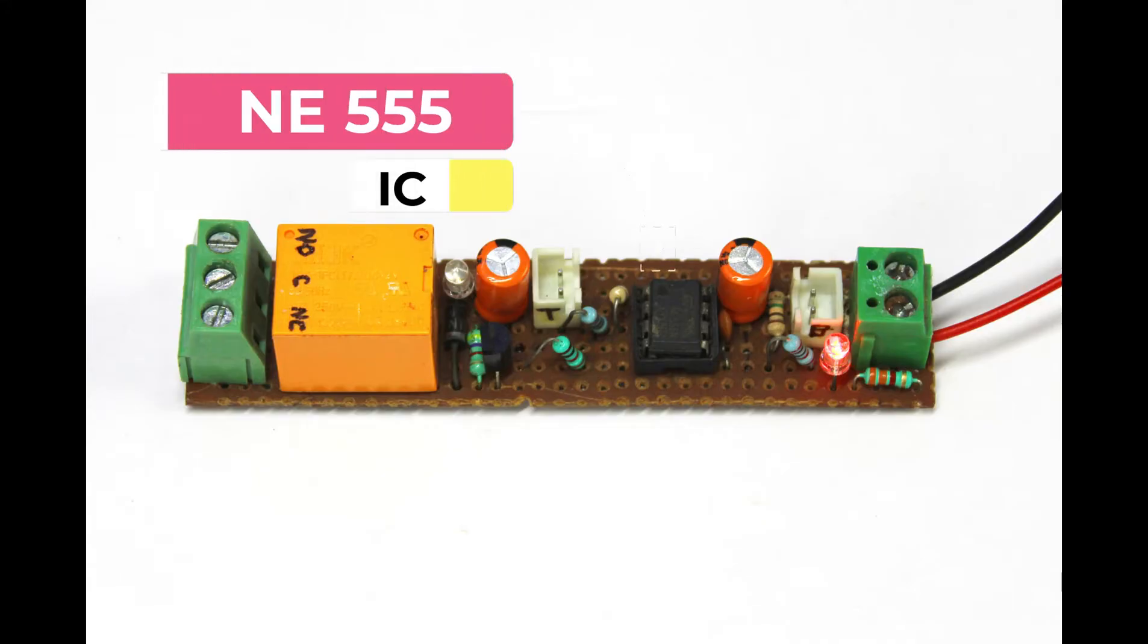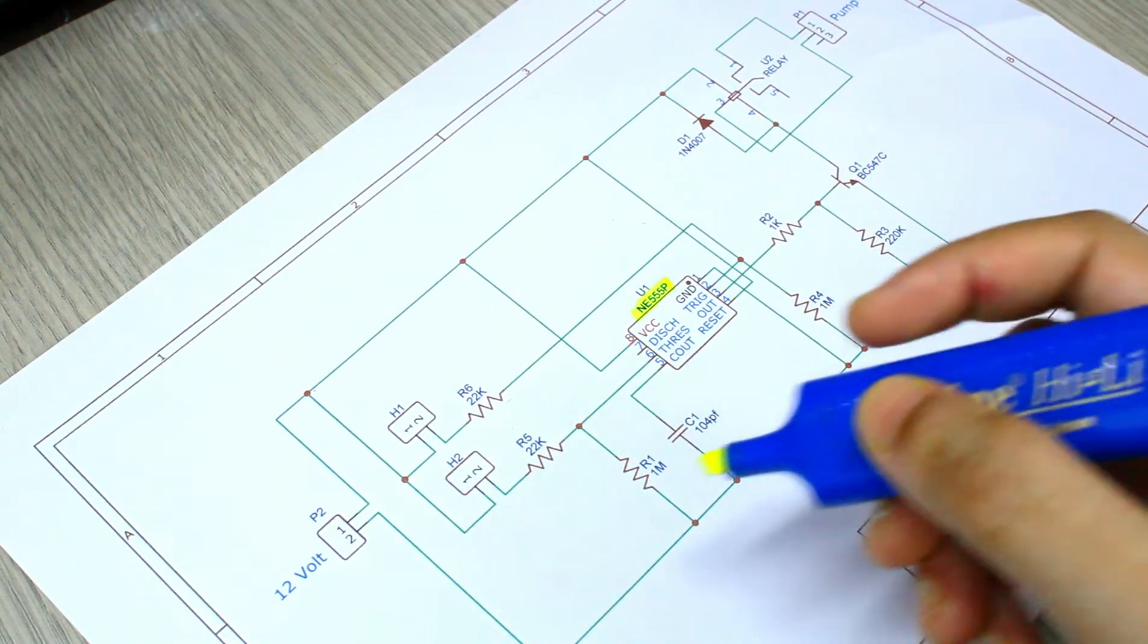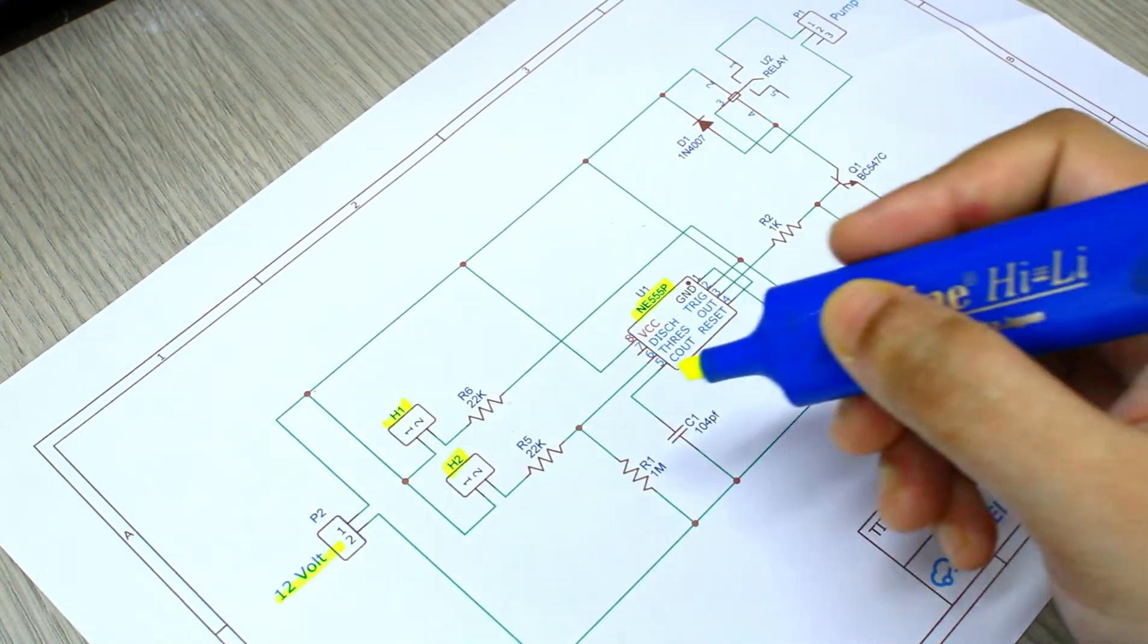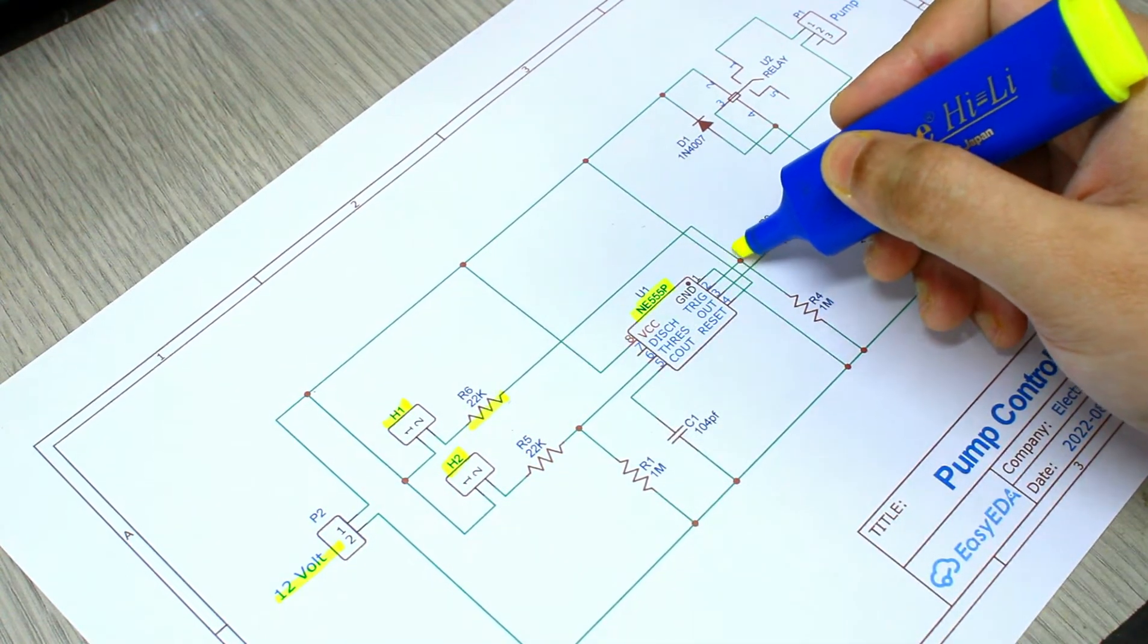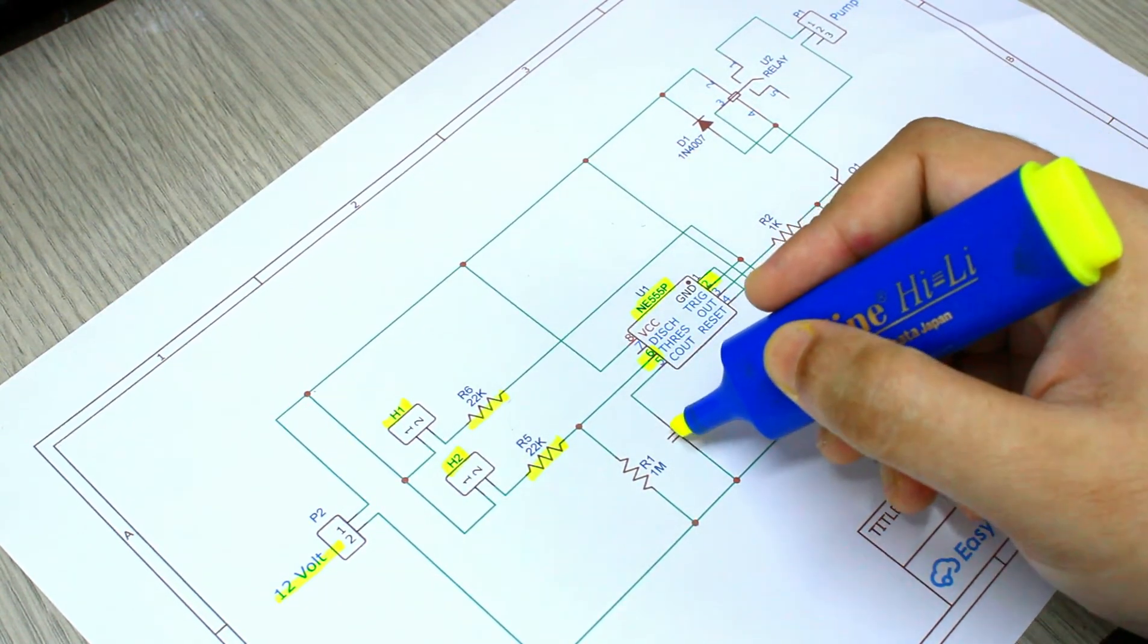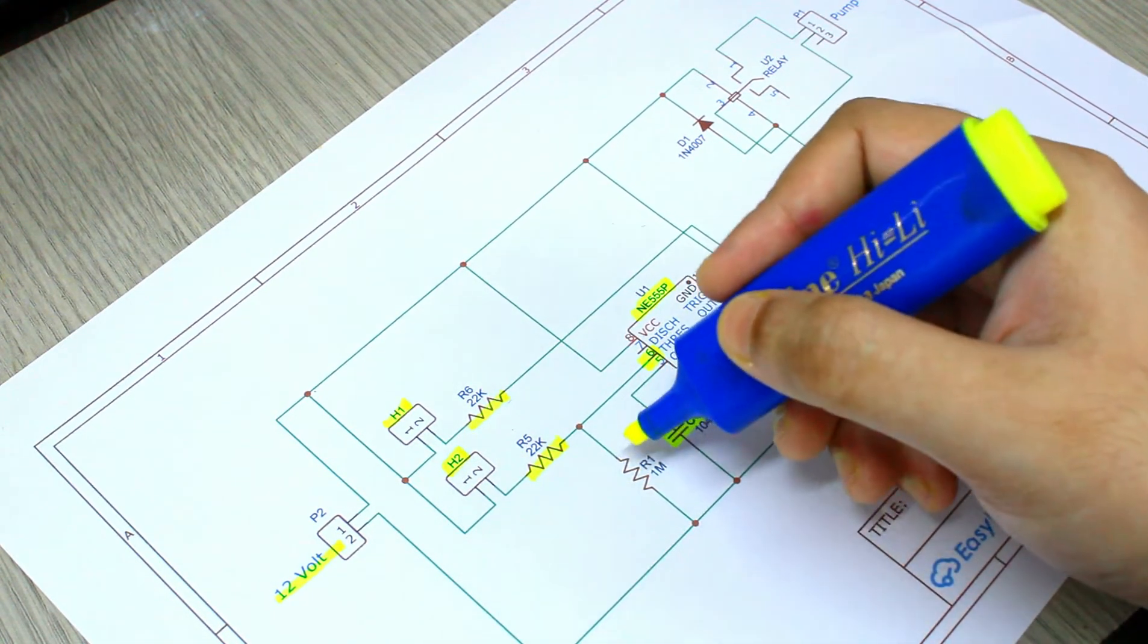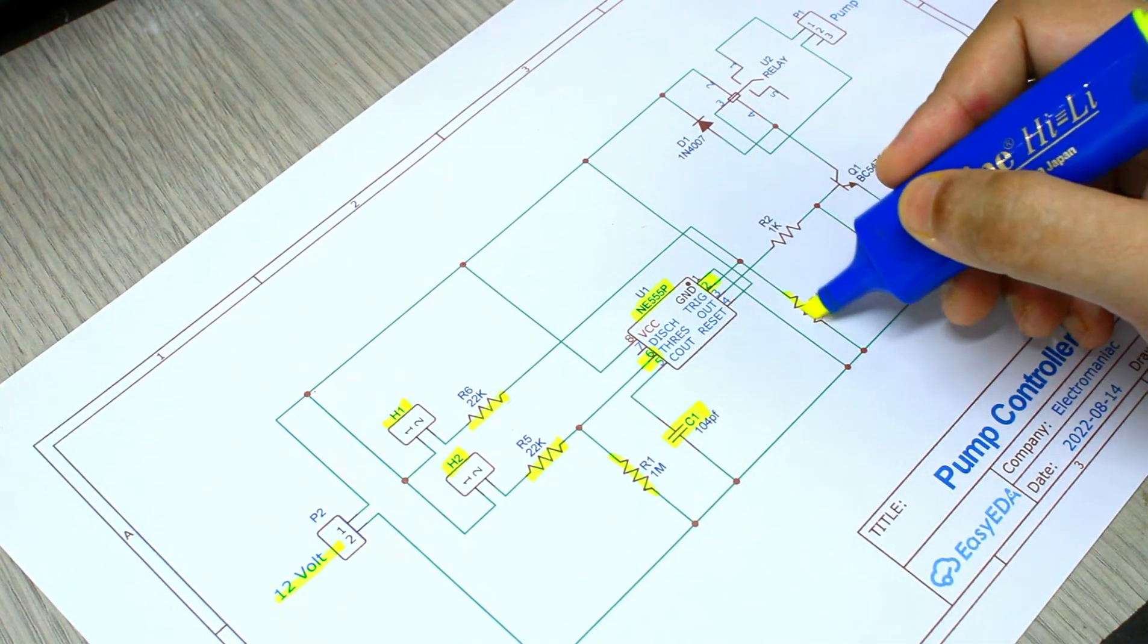For the 555 timer IC circuit you would obviously need a 555 IC. It is powered with 12 volt. The two float switches are connected to pin 2 or the trigger pin, and another to pin 6 or the threshold pin. A 104 pF capacitor is connected to pin 5. Both the float switches are pulled down with 1 megaohm resistors.